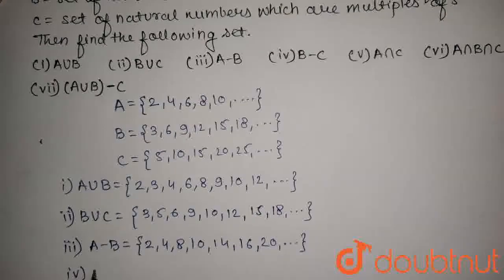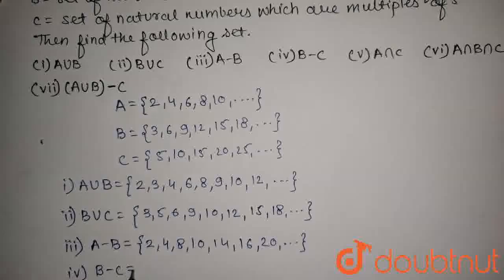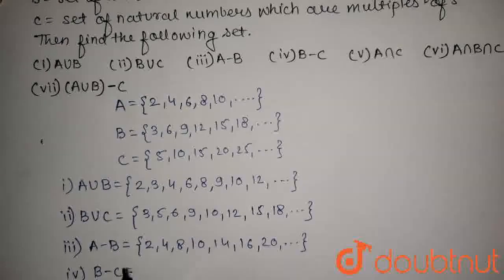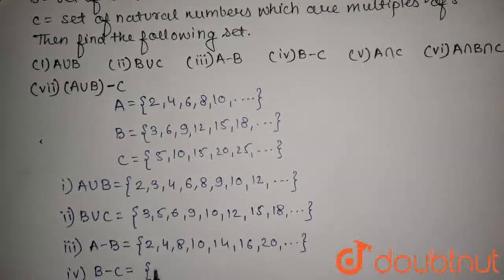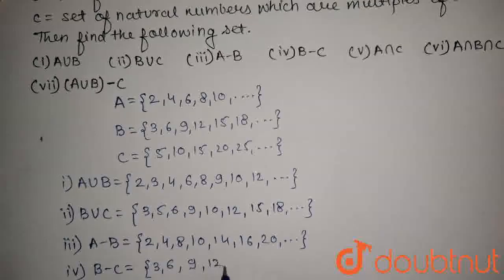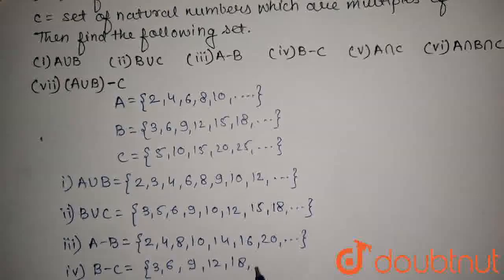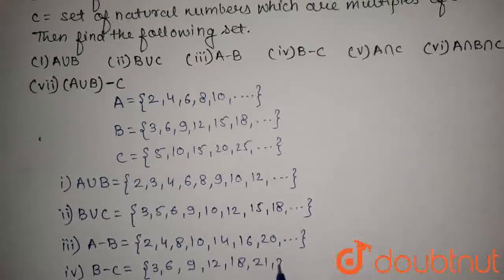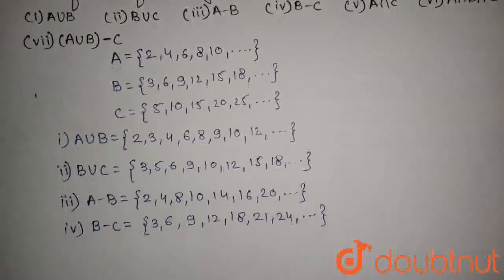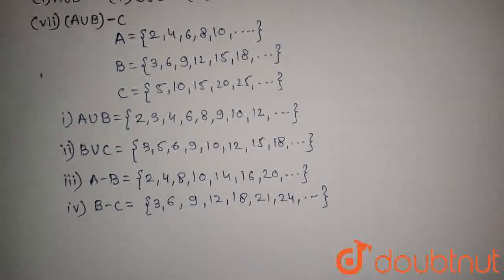The fourth part is to find B minus C. B minus C will contain natural numbers which are multiples of 3 but not of 5. So this set will contain 3, 6, 9, 12, 18, 21, 24, and so on. In this set, element 15 is excluded because it is a multiple of 5.